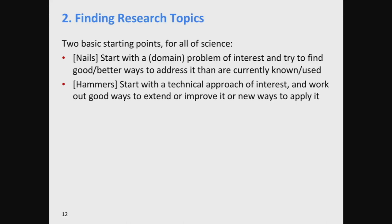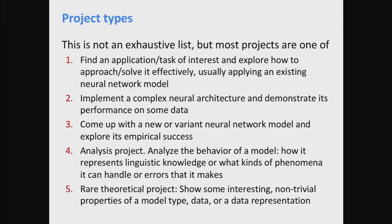Now I want to start saying a bit about custom final projects — some of the thinking and types of things you could do. In philosophy of science, there are basically two ways to have a project: you either start with some domain problem of interest — like 'I'd like to do better machine translation' — and then work out some ways to address it with technology. Or you start with some technical approach of interest, like 'those LSTMs seem kind of neat, but I think it'd be better if it changed in this other way,' and you start exploring from a technical direction.